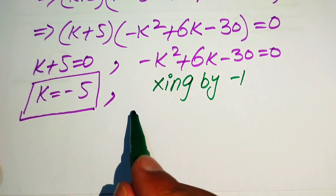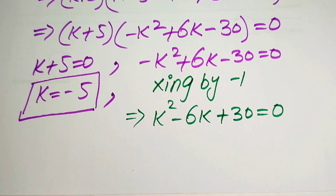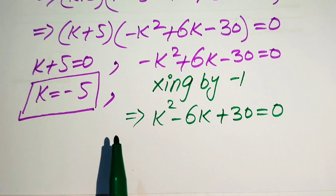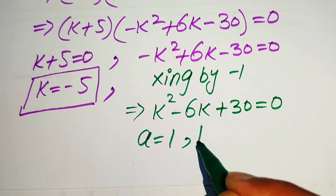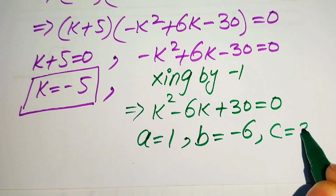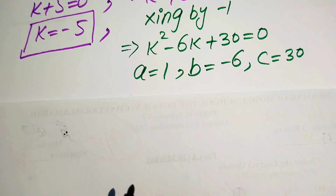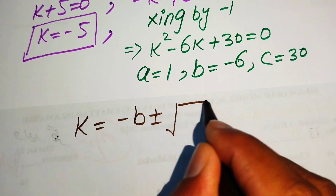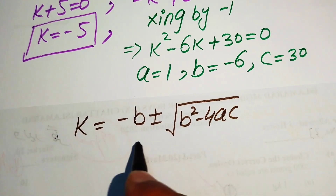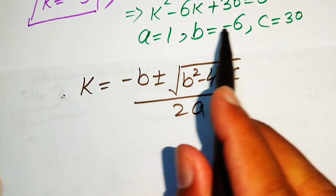Multiplying by minus 1 gives k squared minus 6k plus 30 equals 0. We identify the coefficients: a equals 1, b equals minus 6, c equals 30. We now apply the quadratic formula: k equals (minus b ± √(b squared minus 4ac)) divided by 2a.